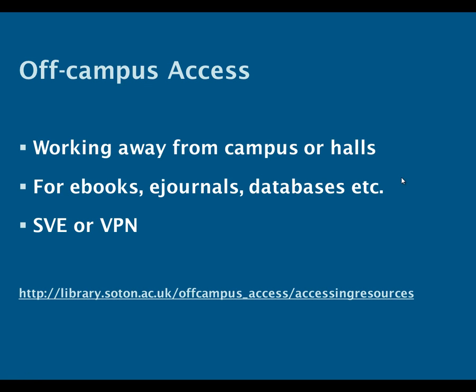Off-campus access is very important. While on campus or in halls, everything will work smoothly — e-books, e-journals and databases will just work as you'd expect. But if you're living in private accommodation or away from the university, you'll find it very difficult to access online resources unless you have a connection to the university. The main type of connection is an SVE connection — that's Southampton Virtual Environment. I would recommend setting up one of those. If that doesn't work, you can try a VPN — a virtual private network connection. You can find out about both at the web address shown here.